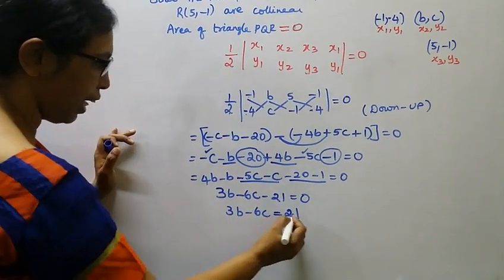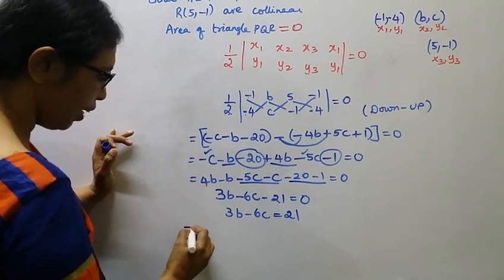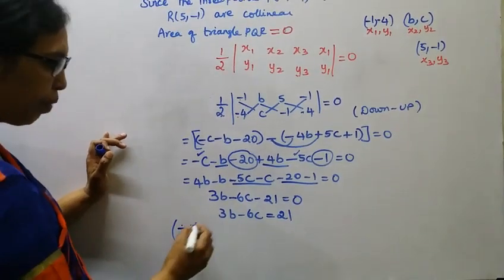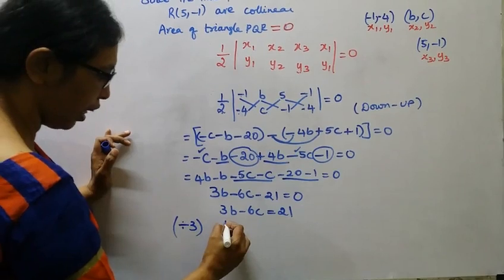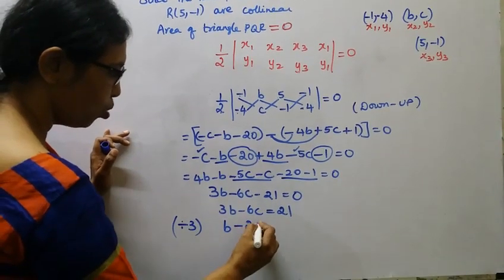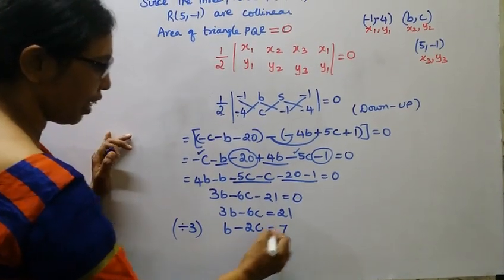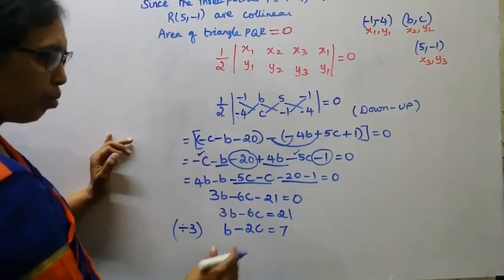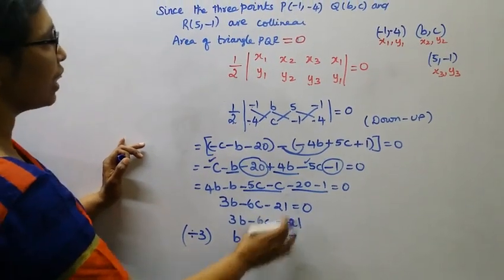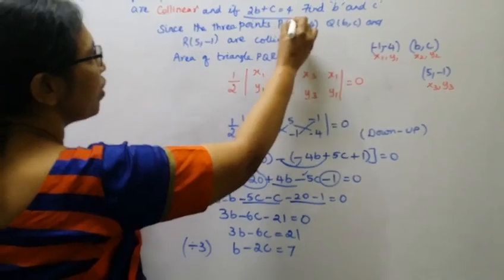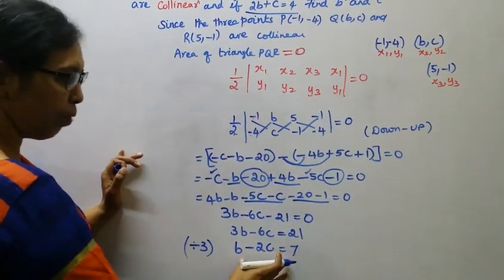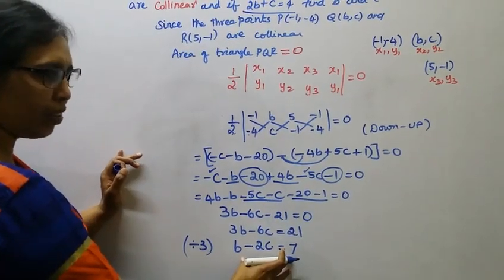Dividing the entire equation by 3, we get B minus 2C equals 7. We now have two equations: the given equation 2B plus C equals 4 (equation 1), and the derived equation B minus 2C equals 7 (equation 2).